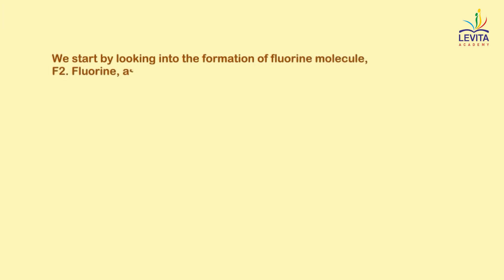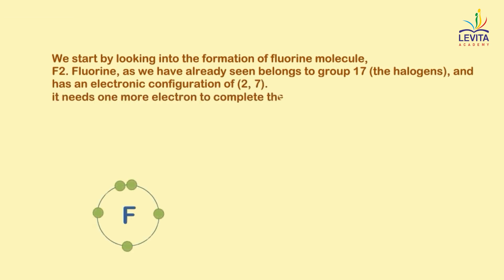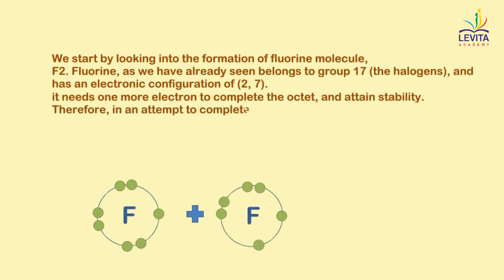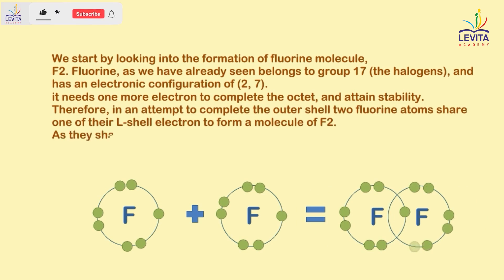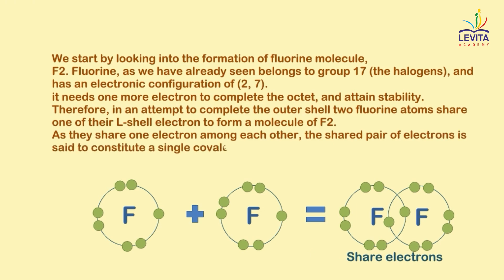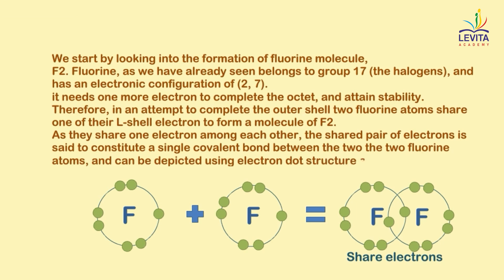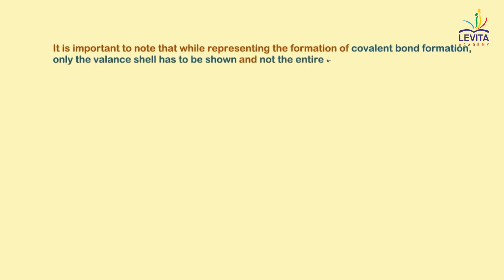We start by looking into the formation of the fluorine molecule, F2. Fluorine belongs to group 17, the halogens, and has an electronic configuration of 2, 7. So it needs one more electron to complete the octet and attain stability. Therefore, in an attempt to complete the outer shell, two fluorine atoms share one of their L-shell electrons to form a molecule of F2. As they share one electron among each other, the shared pair of electrons constitutes a single covalent bond between the two fluorine atoms, and can be depicted using an electron dot structure. It is important to note that while representing covalent bond formation, only the valence shell has to be shown and not the entire electron distribution.